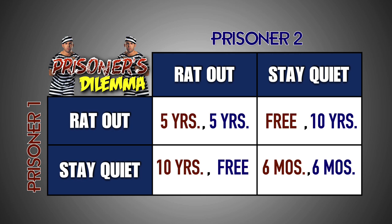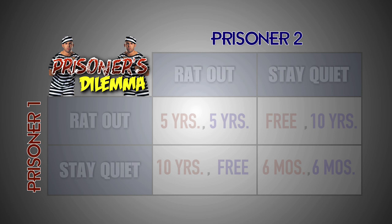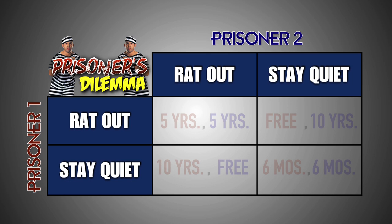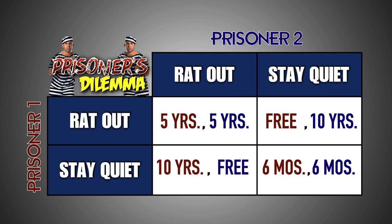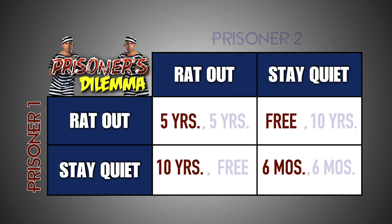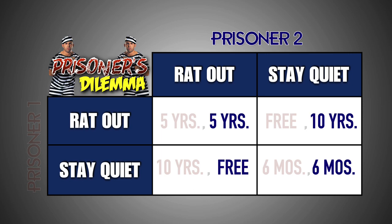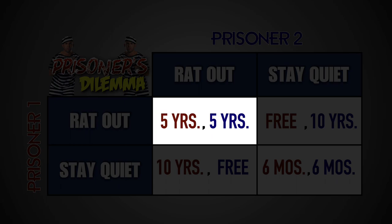Game theory usually involves two players. In this game, Prisoner 1 is the row player and Prisoner 2 is the column player. In every game theory scenario, each player has two possible strategies to choose from. In this game, each prisoner can choose to either rat out the other prisoner and blame them for the robbery, or use their right to remain silent and stay quiet about the crime. In every game, there are four possible payoffs for each player based on the strategies each player has to choose from. As the row player, Prisoner 1's payoffs are listed first, and as the column player, Prisoner 2's payoffs are listed second. If both prisoners rat each other out, they both go to jail for 5 years.